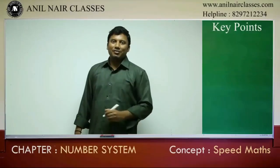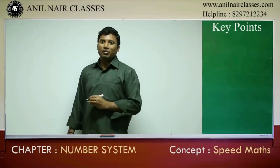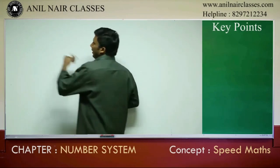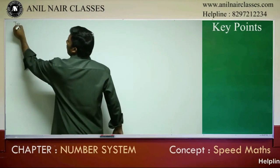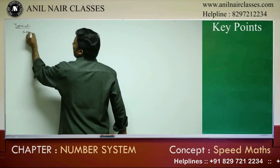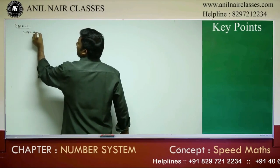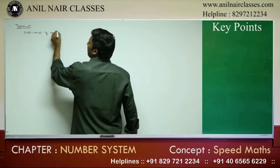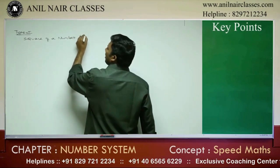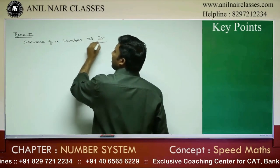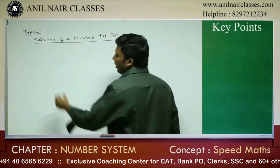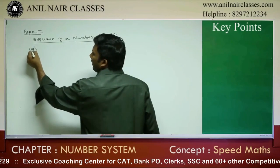Let us discuss a few specific techniques to find the square of certain numbers. The first specific technique is how to find the square of a number up to 35. It is a very interesting logic. You need to remember the squares up to 25.